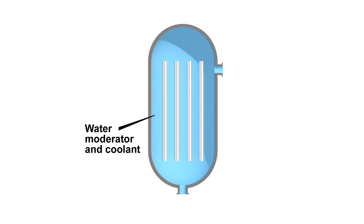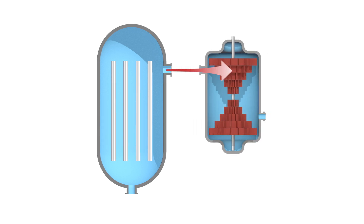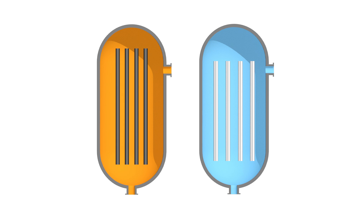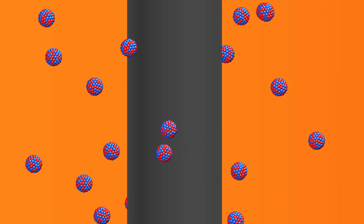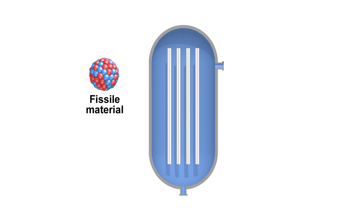In the case of light water reactors, solid fuel rods contain the fissile material, and water surrounding the fuel acts as both a moderator and coolant. The coolant carries heat to turbines that generate electricity. In a molten salt reactor, the core operates very differently. The primary coolant is a salt heated above its melting point so it is a fluid. In the most commonly proposed configuration, instead of fuel rods, fissile material is dissolved in the molten salt, and the fuel flows around graphite rods which moderate the energy of the neutrons to support the nuclear chain reaction.